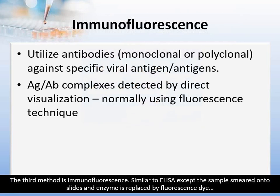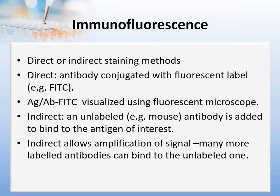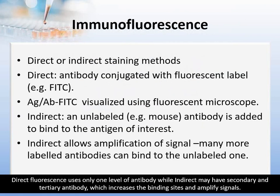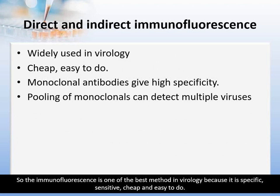The third method is immunofluorescence. Similar to ELISA except the sample is smeared onto slides and the enzyme is replaced by a fluorescent dye, which glows and is visible through a fluorescent microscope to indicate positive results. Direct fluorescence uses only one level of antibody, while indirect may have secondary and tertiary antibody, which increases binding sites and amplifies signals. Immunofluorescence is one of the best methods in virology because it is specific, sensitive, cheap, and easy to do.